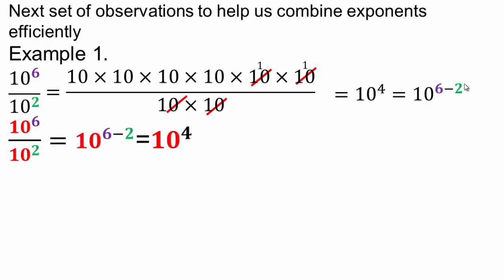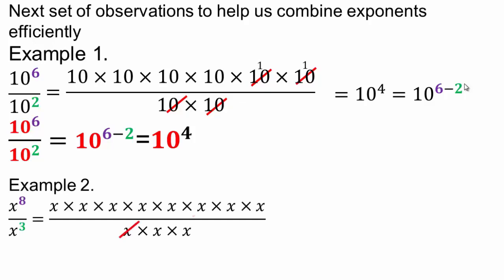Let's do a few more to make sure that really is what's happening. x divided by x, x divided by x, another x divides into x, and you're left with x to the 5th, or 8 minus 3.